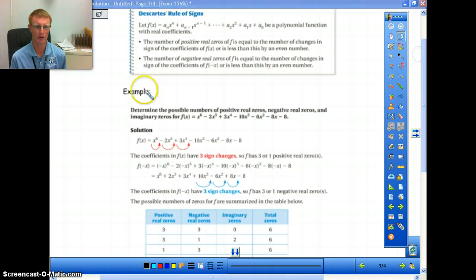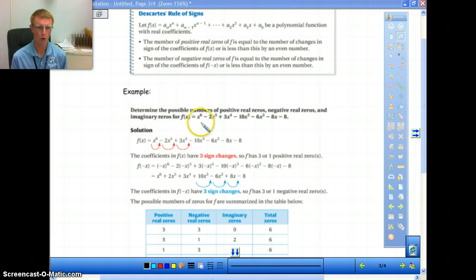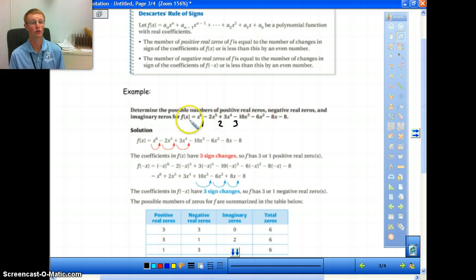If you look at this example right here, we have a function that is to the sixth power. What we're going to do is we're going to look to see how many sign changes there are. This starts off with a positive one, then it goes to a negative. So that's one sign change. Then we go from a negative two to a positive three. So that's our second sign change. And then we go from a positive to a negative. That's our third sign change. And then it stays negative the rest of the way. So there's no other sign changes.